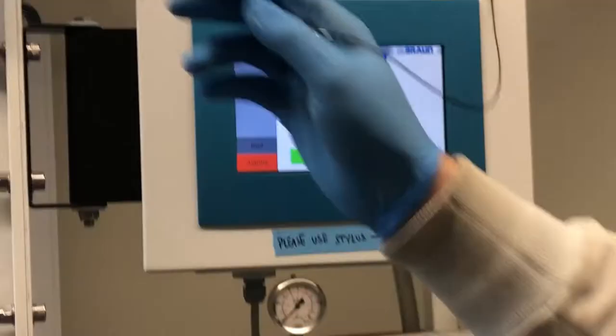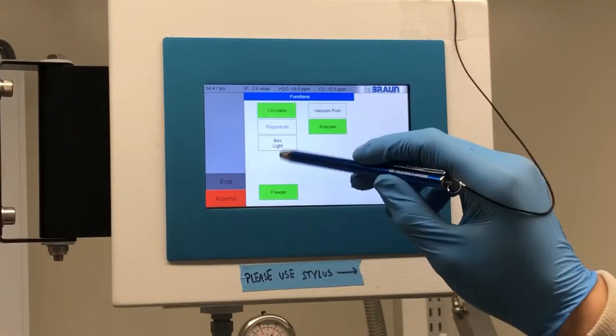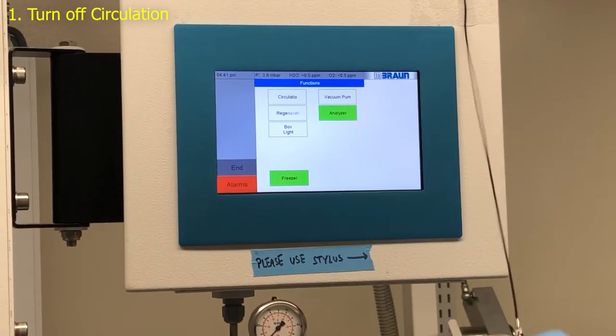So the first thing we're going to do, I have the box light on, but it could be off, it doesn't matter. But you want to turn off circulation, alright, that's the first thing to do.